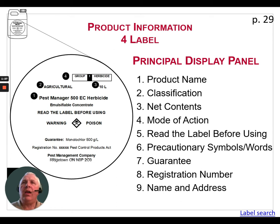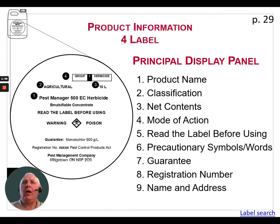The federal classification covers domestic products used by homeowners, as well as restricted and commercial products. The third item is the net contents — simply how much is in the package. In this case it's 10 liters. For dry products it will be listed by weight.